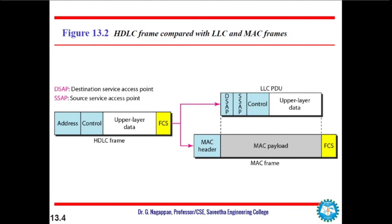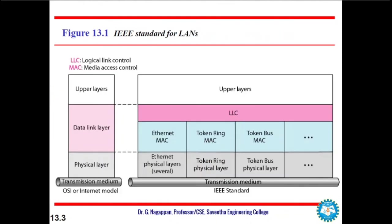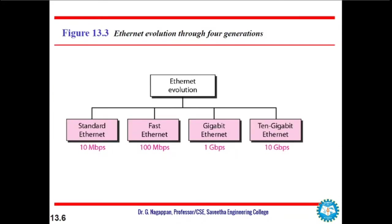Ethernet has gone through four generations: Standard Ethernet with 10 Mbps, Fast Ethernet with 100 Mbps, Gigabit Ethernet with 1 Gbps, and 10 Gigabit Ethernet with 10 Gbps. These generations have been evolving with the growth of speed.